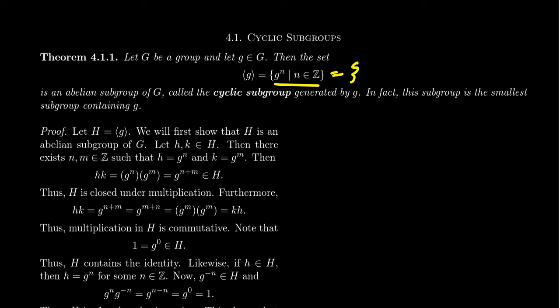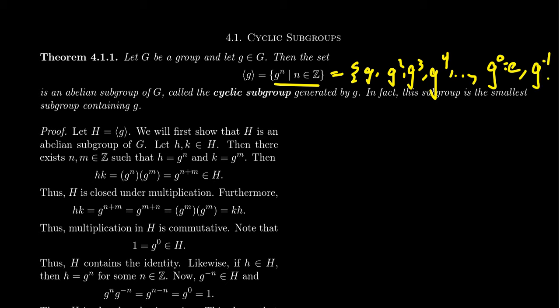This includes g to the first, g squared, g cubed, g to the fourth. Since it has all integer powers, it includes g to the zero, which is the identity, g to the negative one, which is its inverse, g to the negative two, which is its inverse squared, and so on. It could be that some finite power equals the identity, like g to the fourth equals e, so some of these could repeat — that's okay. We claim that this set of powers of g is, in fact, an abelian subgroup of G, referred to as the cyclic subgroup generated by g, and it is the smallest subgroup containing the element g.